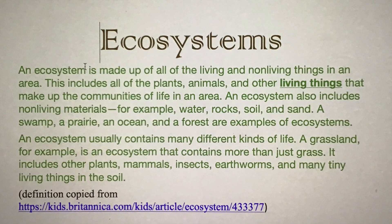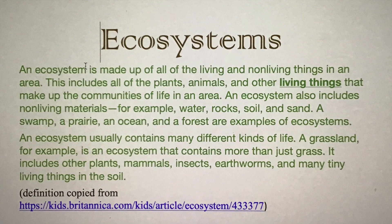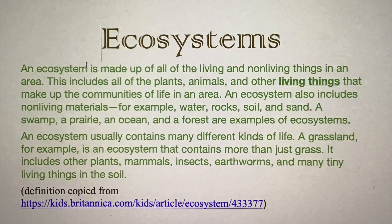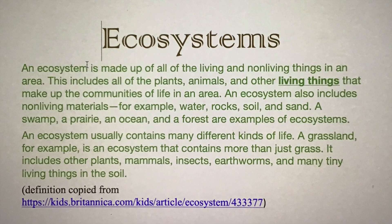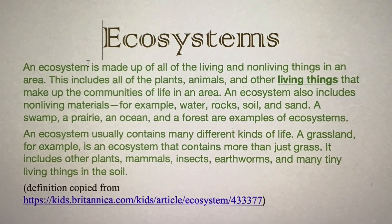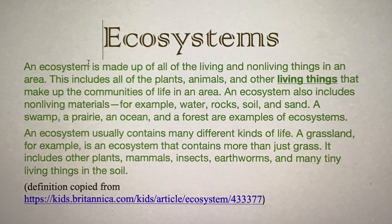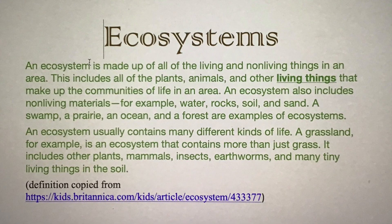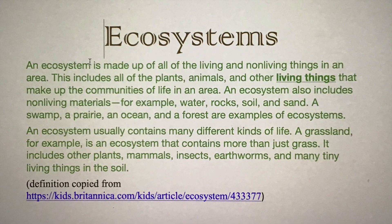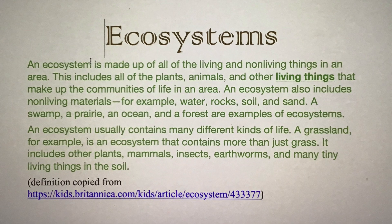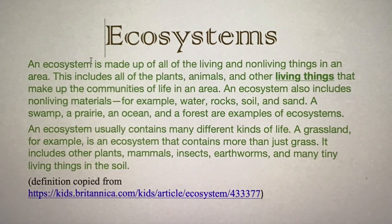A swamp, a prairie, an ocean, and a forest are examples of ecosystems. An ecosystem usually contains many different kinds of life. A grassland, for example, is an ecosystem that contains more than just grass.